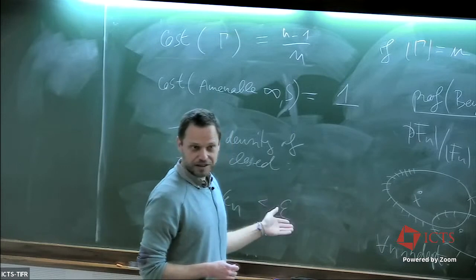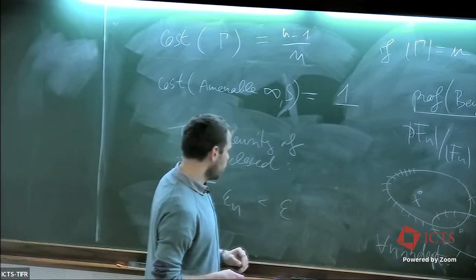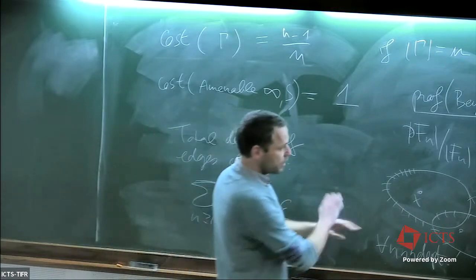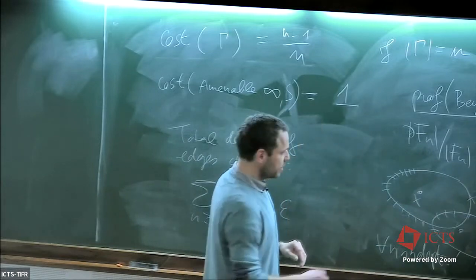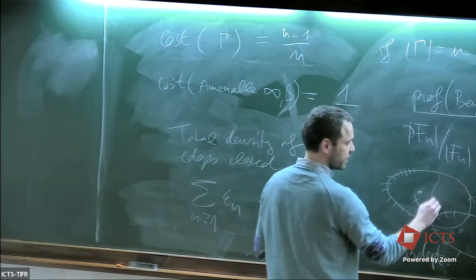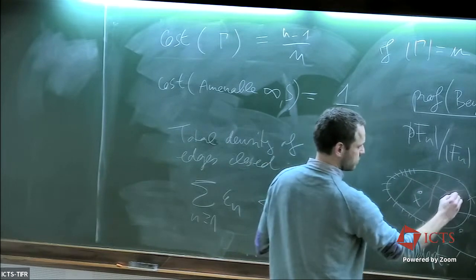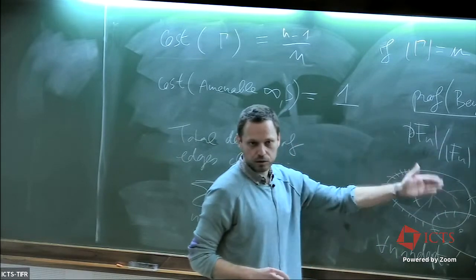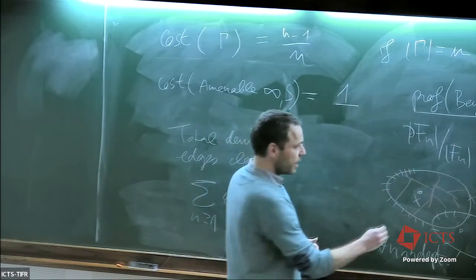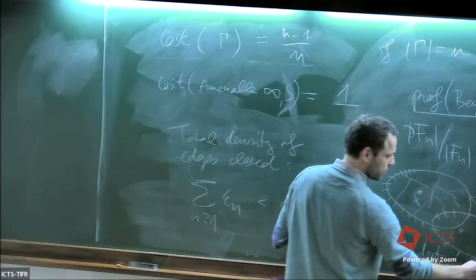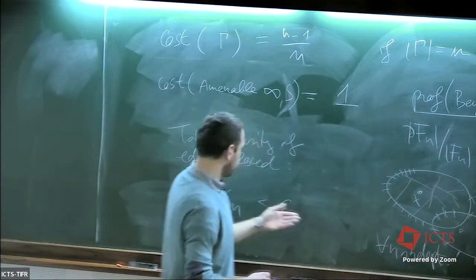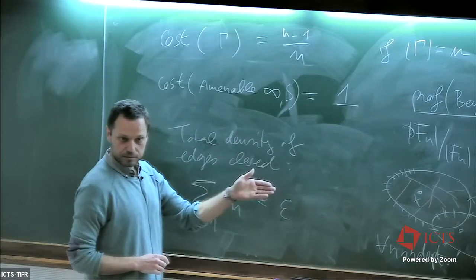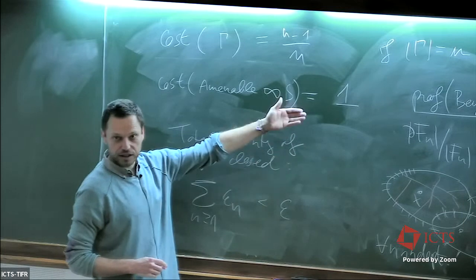To show cost equals one: I have the partition into finite pieces. Inside each piece take a uniform spanning tree — this has average degree close to 2, with one half close to 1. Add back all the deleted edges, which have density epsilon. The total average degree is 2 plus epsilon with the one half giving cost close to 1 plus epsilon/2. Since this holds for any epsilon, the infimum cost is one.